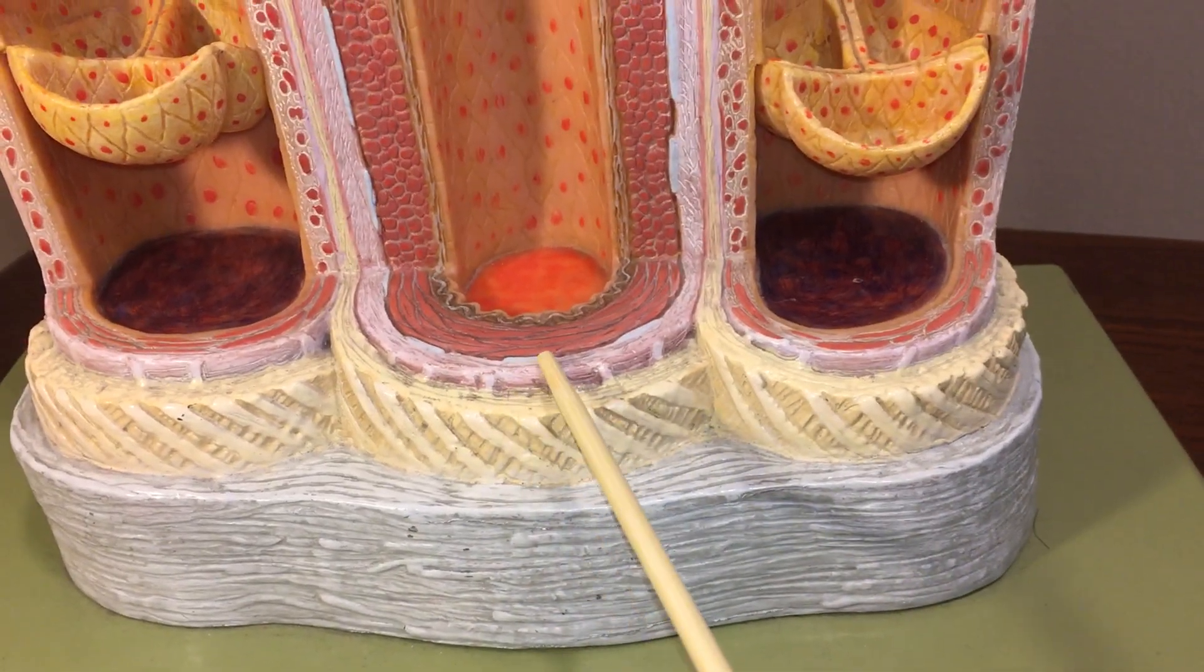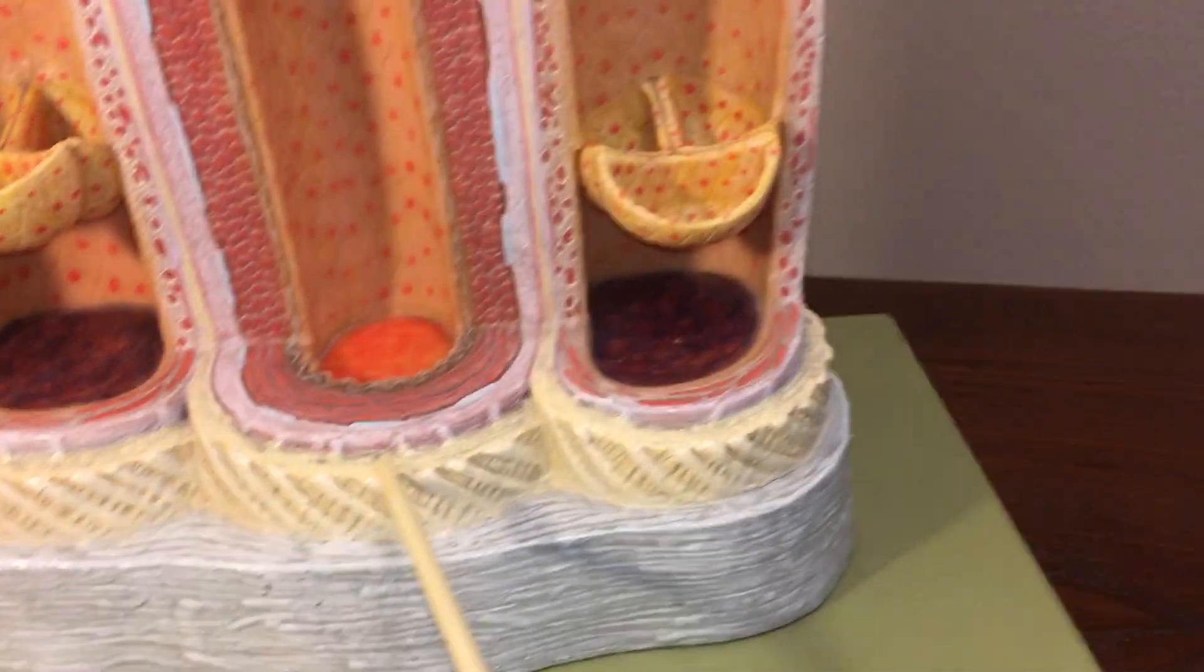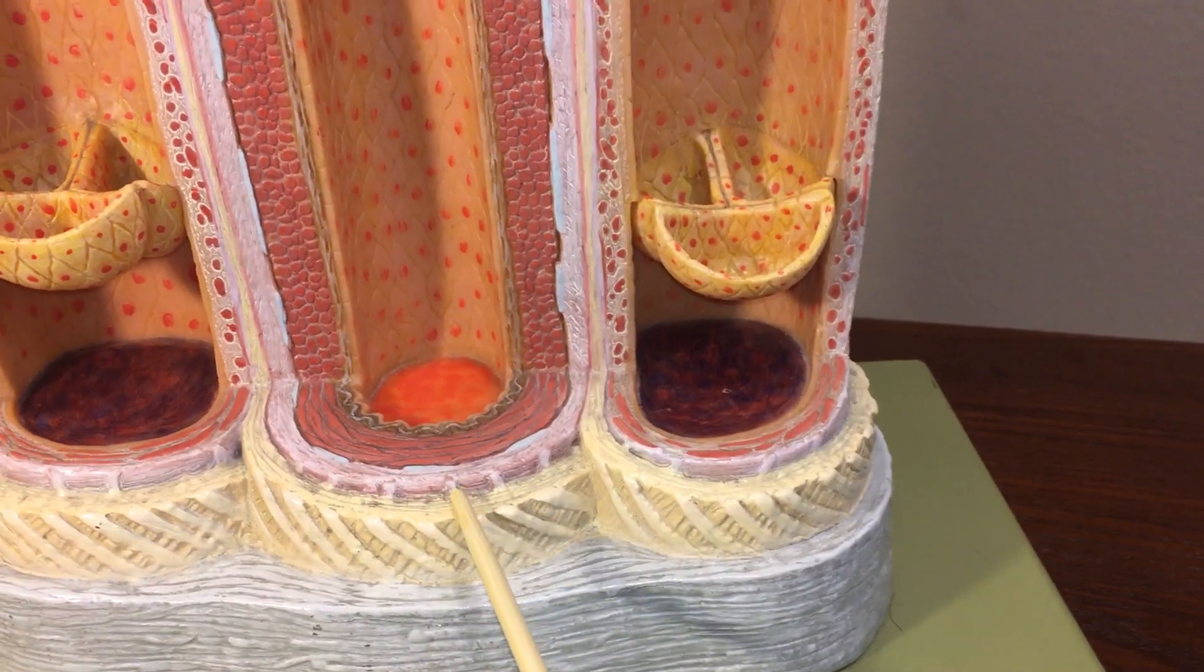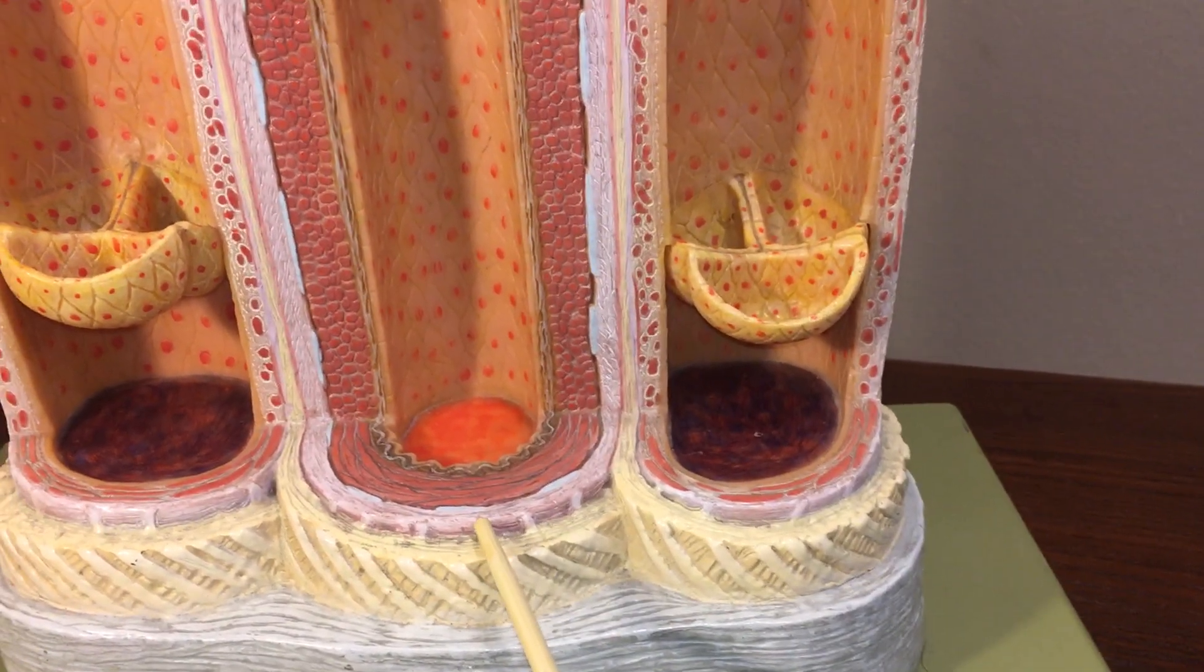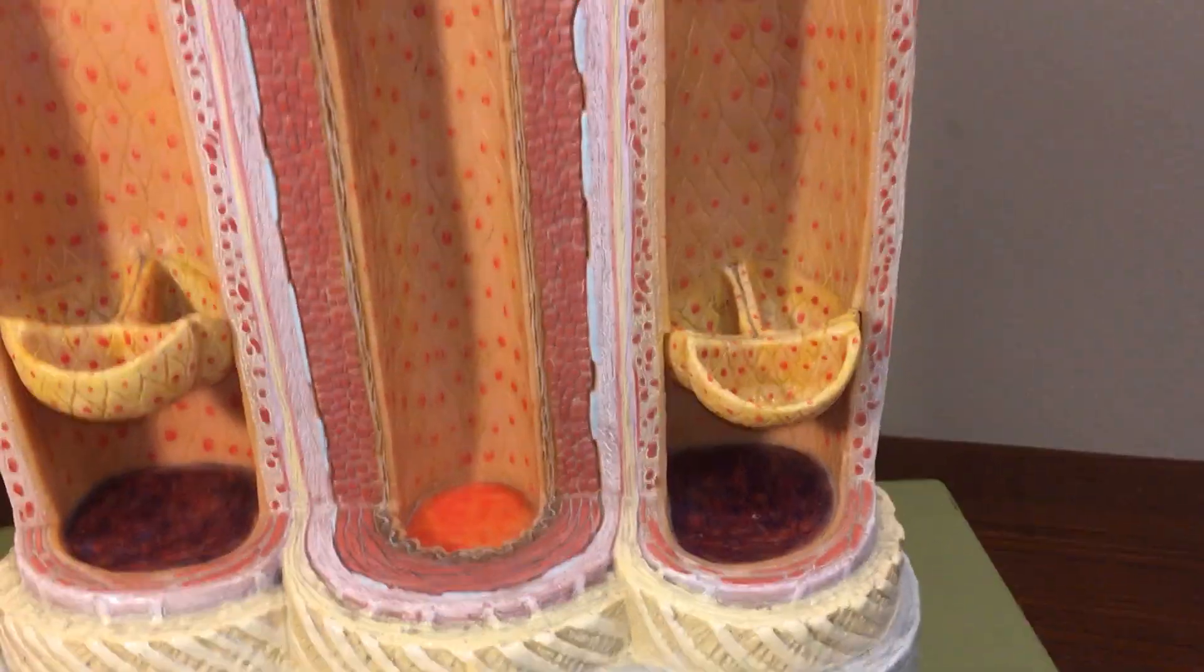That pink and a little bit yellow kind of blends to different connective tissue. This is the tunica externa. Some people call it the adventitia.